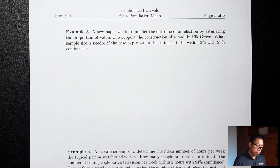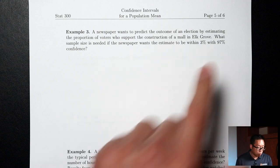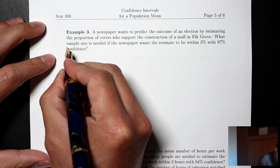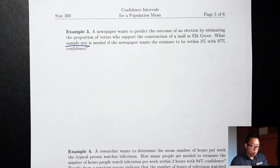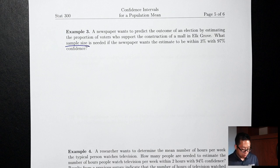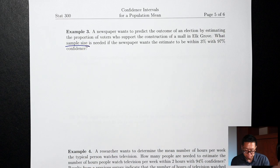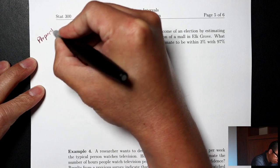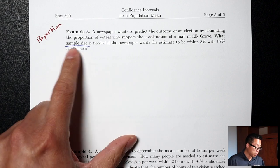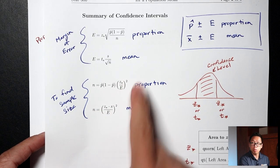Example 3: A newspaper wants to predict the outcome of an election by estimating the proportion of voters who support the construction of a mall in Elk Grove. What sample size is needed if the newspaper wants the estimate to be within 3% with 97% confidence? This asks for a sample size in a proportion situation, so we use n = p-hat × (1 − p-hat) × (z-star / e)².